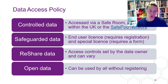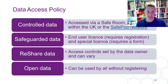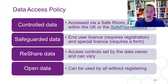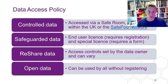A quick point on our different data access levels. Starting at the most restricted: we have controlled data, also called secure access data, which can only be accessed through a safe room, a secure lab within the UK, or the SafePod network. Next, we have safeguarded data, available through our end-user license, which requires registration. Some of this data is also special license data with additional requirements. Then there's reshare data, self-deposited by data creators or owners, where access and controls can vary.